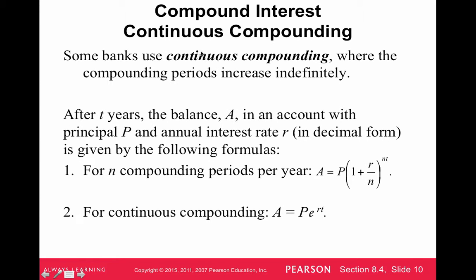Sometimes banks use what's called continuous compounding, where the compounding periods increase indefinitely. You'll probably see this more on a loan. If we use continuous compounding, then we have a different formula — this will also be given in your formula sheet — where E is just a number. So either we're doing N compoundings per year, or we're doing continuous compounding; there are two different formulas.